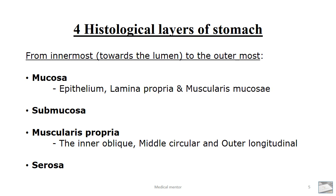The submucosa lies in between the muscularis mucosa and the muscularis propria. The submucosa mainly has connective tissues — that is, elastic fibers — the Meissner's plexus of nerves, veins, arteries, and lymphatics. The function of the Meissner's plexus of nerves is to control the secretion of the glands and the blood flow.